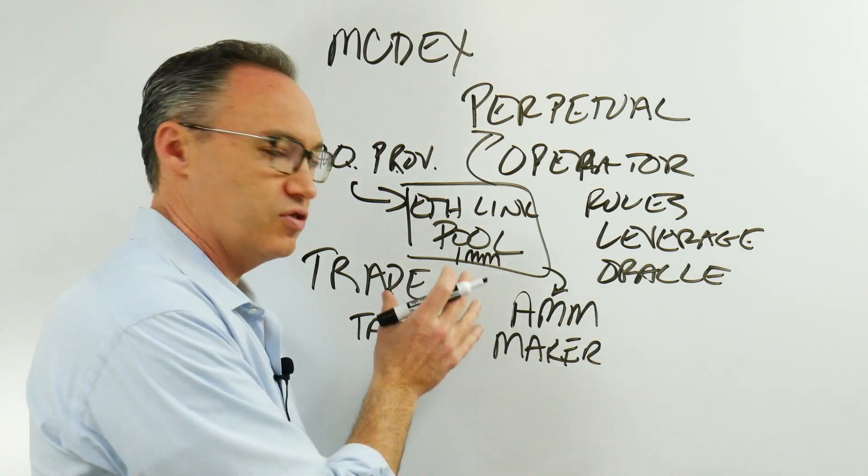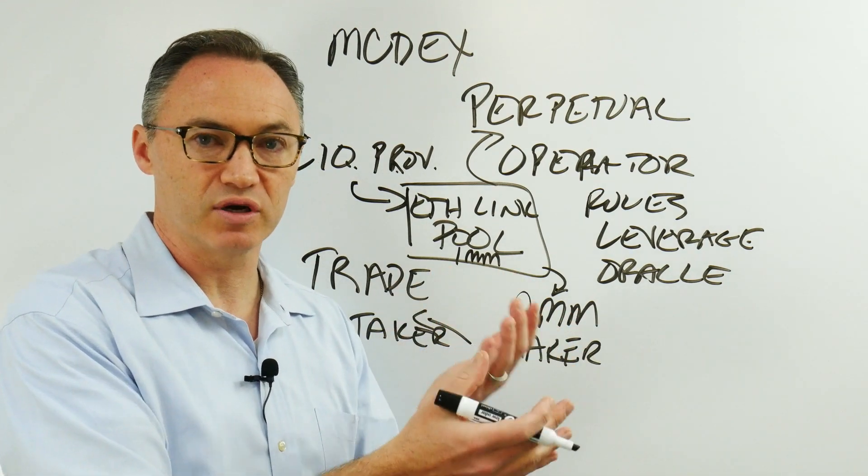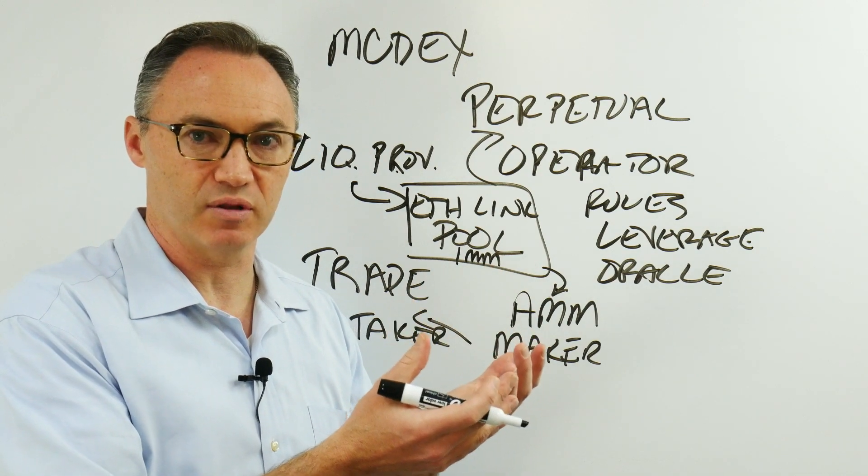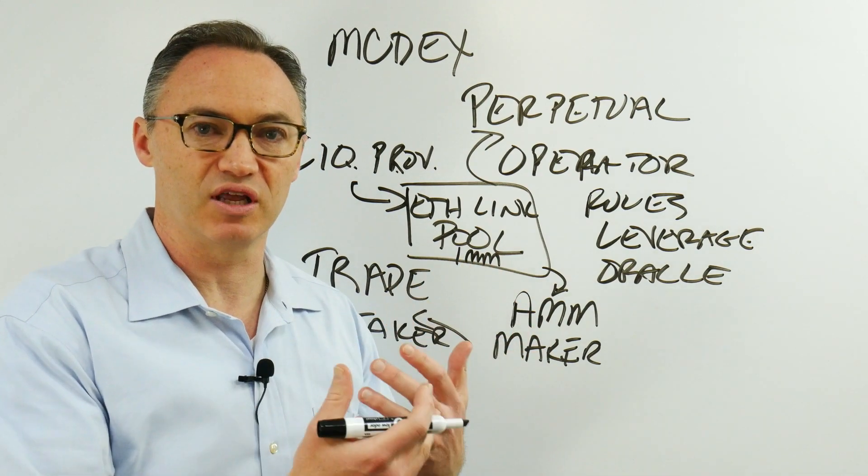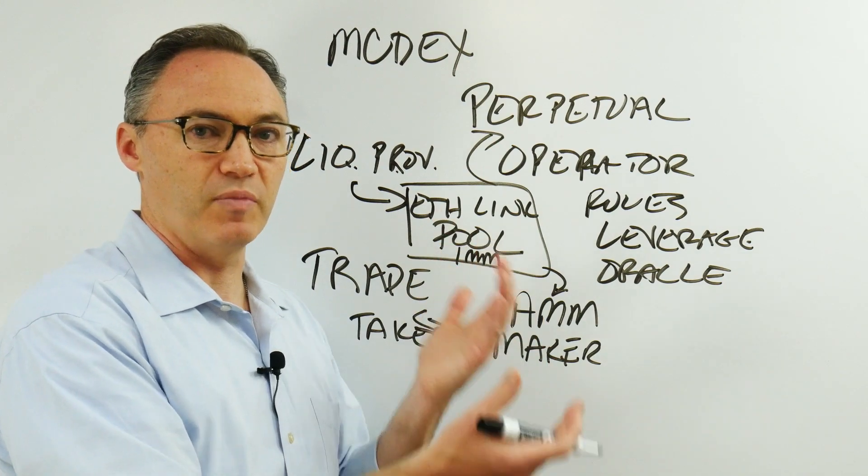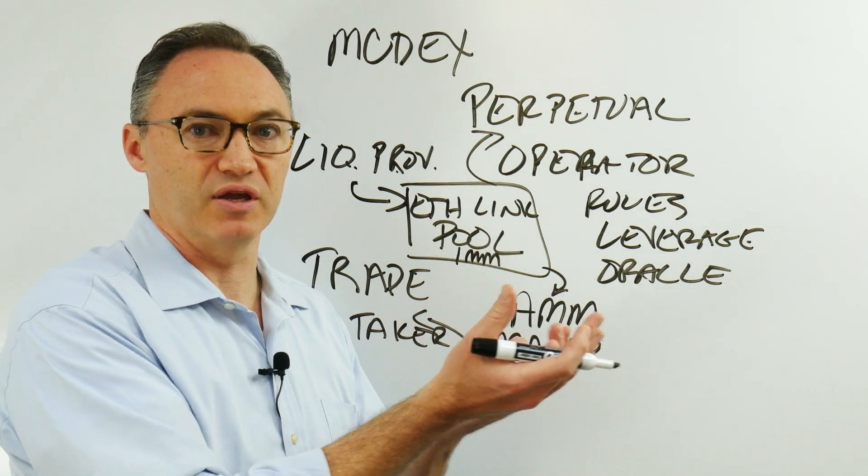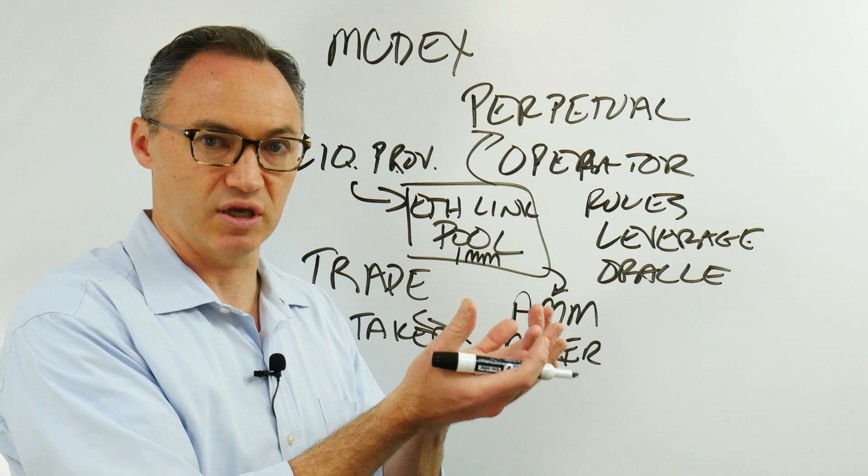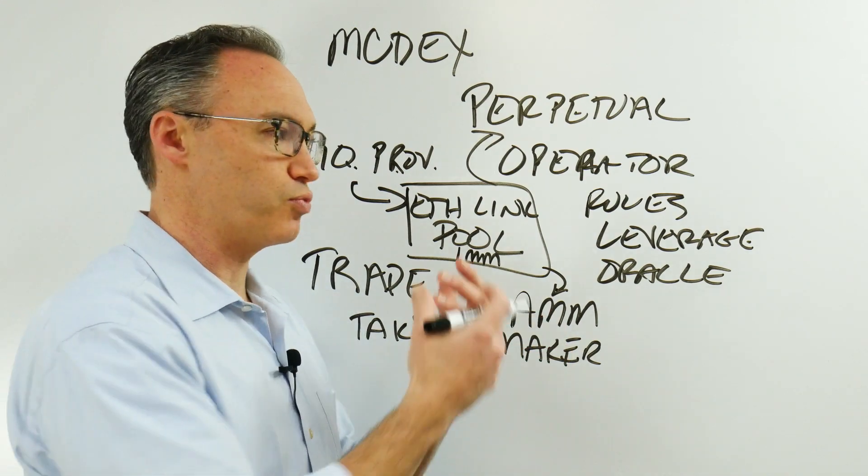It gets that way if only the traders are providing the liquidity. If only the traders are providing the collateral, then the market gets out of whack because there's no funding mechanism to bring the makers and the takers, the bid and the ask, the long and the short together.